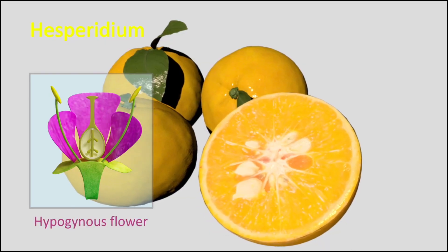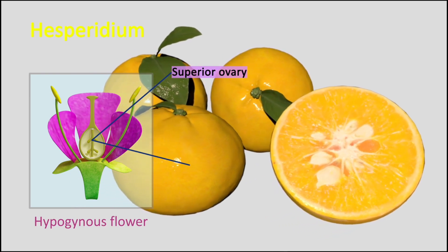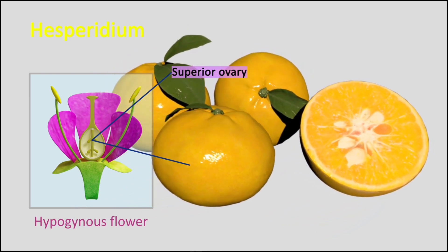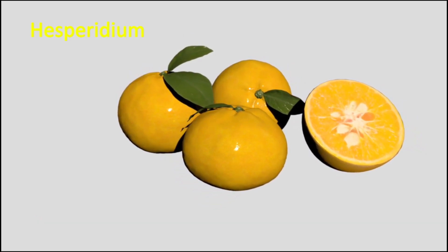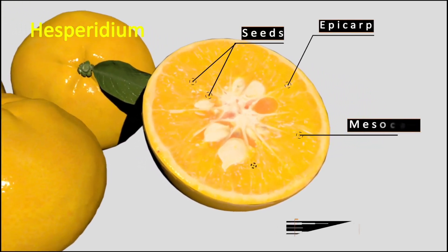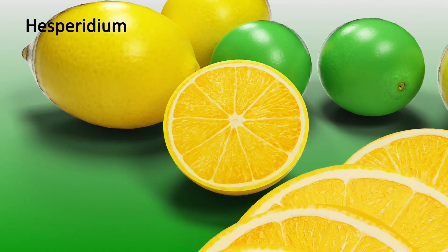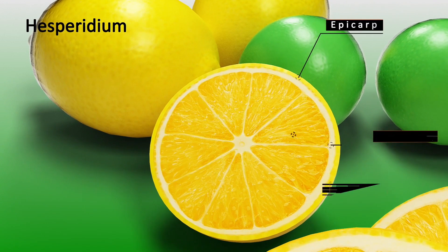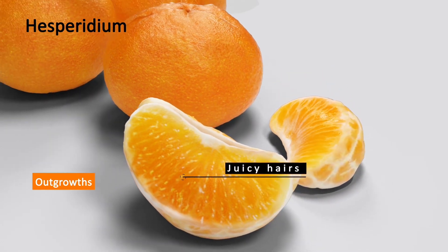Hesperidium: Hesperidium develops from a multicarpillary, syncarpous, multilocular, superior ovary, with seeds on axial placentation. In Hesperidium, the pericarp is differentiated into a thick and leathery epicarp with oil glands, a papery mesocarp, and an endocarp divided into many chambers. From the inner walls of the endocarp, juicy succulent hairs are formed as outgrowths, and those hairs form the edible part of the fruit.